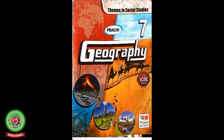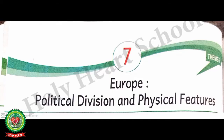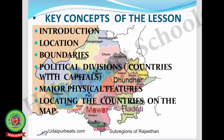Hello students, welcome to the geography class for Class 7. Today we are going to start with the new lesson: Lesson number 7 — Europe: Political and Physical Features. The key concepts of the lesson are introduction, location, boundaries, and political division.